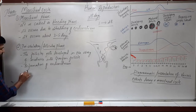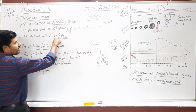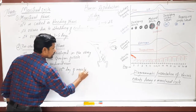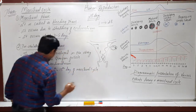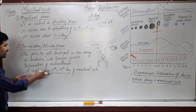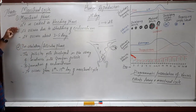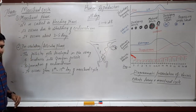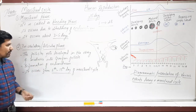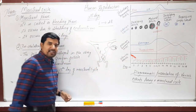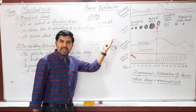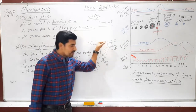In the follicular phase, the follicles in the ovary get developed into the Graafian follicle. Along with that, the activity of the endometrium increases — the endometrium gets reformed. It must be reformed so that if the egg is released and fertilized, the embryo can get implanted in fresh tissue. The endometrial tissue must be present and ready.